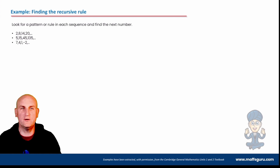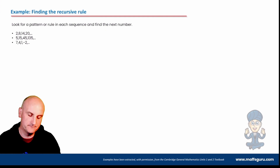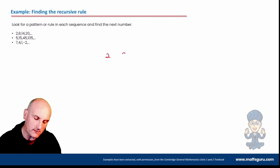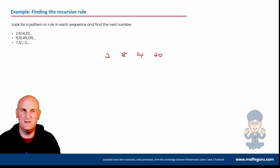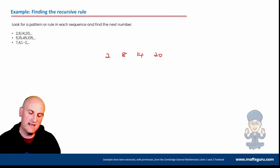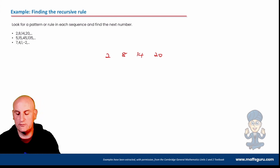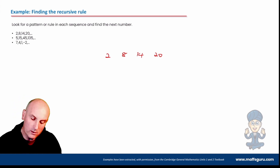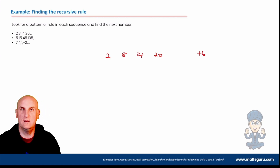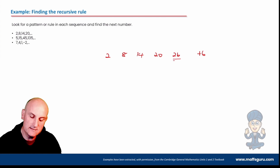Look for a pattern or rule in each sequence and find the next number. We've got 2, 8, 14, 20. First I look to see if I can add numbers. To get from 2 to 8, I'm adding 6. From 8 to 14, I'm adding 6. From 14 to 20, I'm adding 6. So my rule is plus 6, and my next number would be 26.